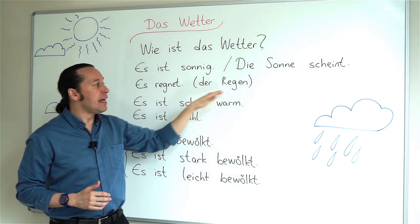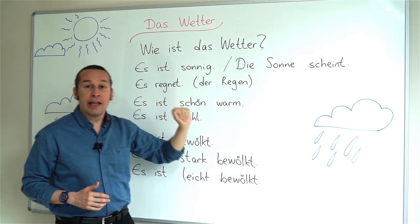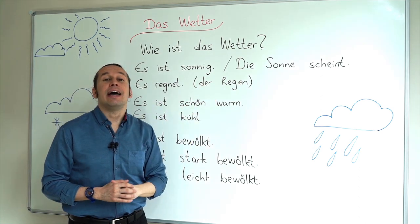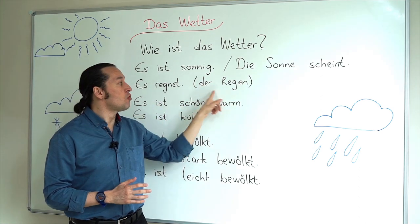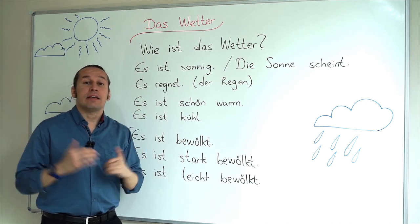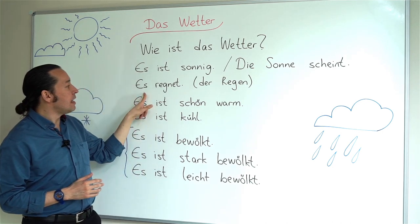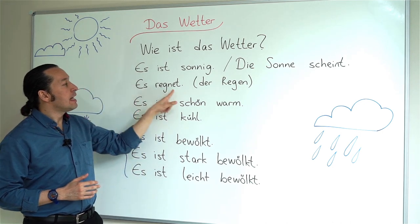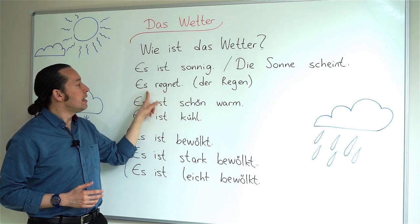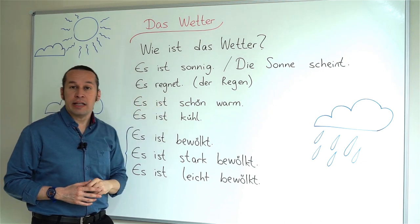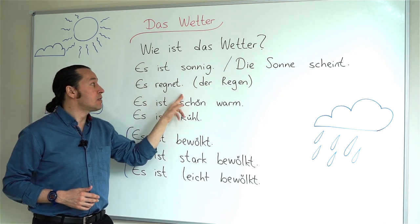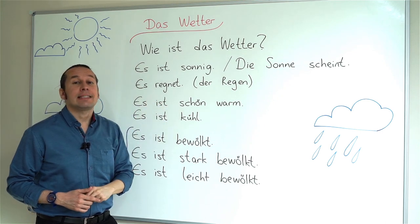If I say rain — the rain in German is 'Der Regen.' If I say it is raining, I will say 'Es regnet.' It rains — 'Es regnet.'